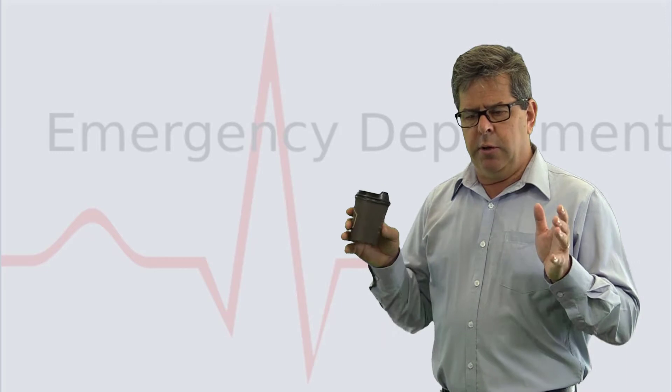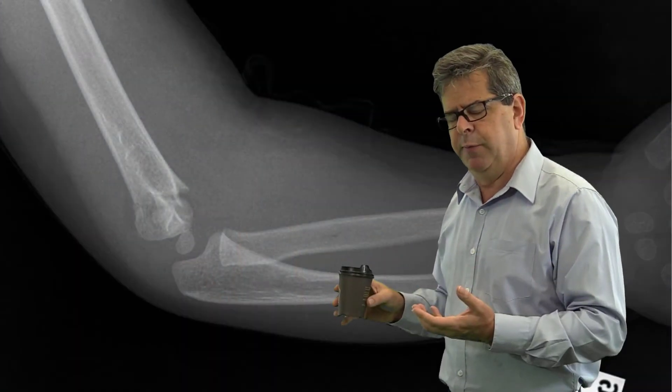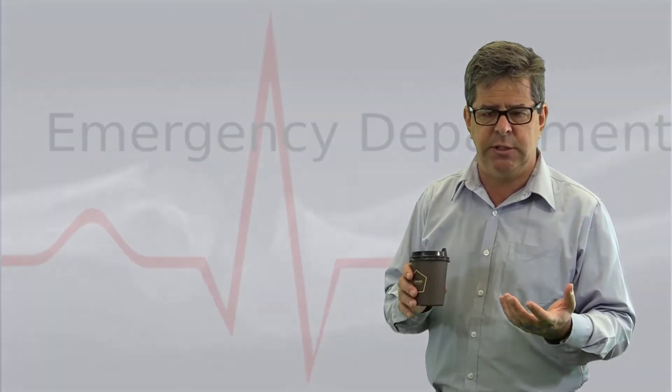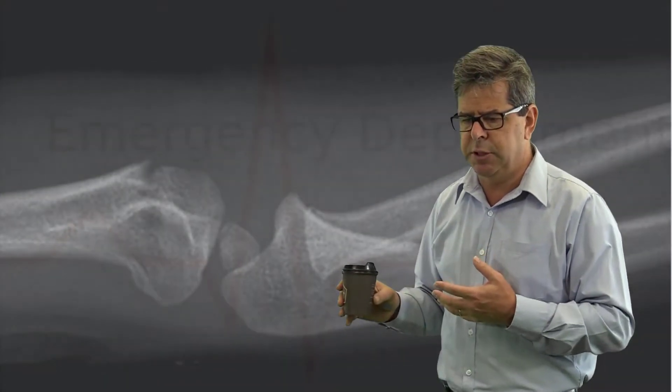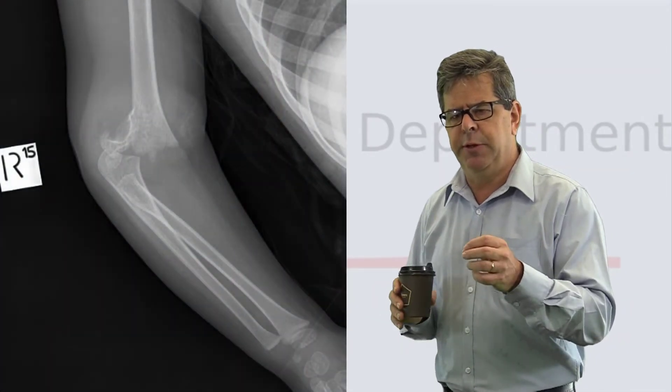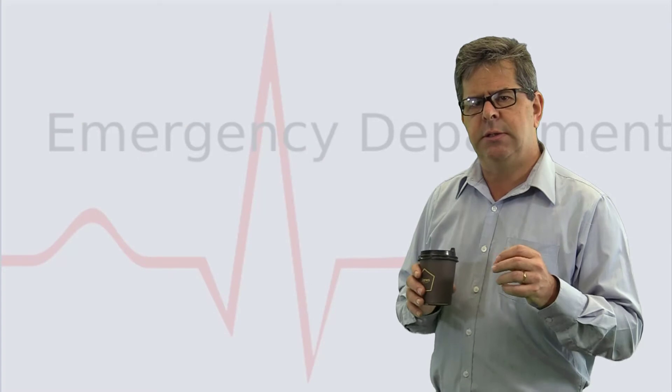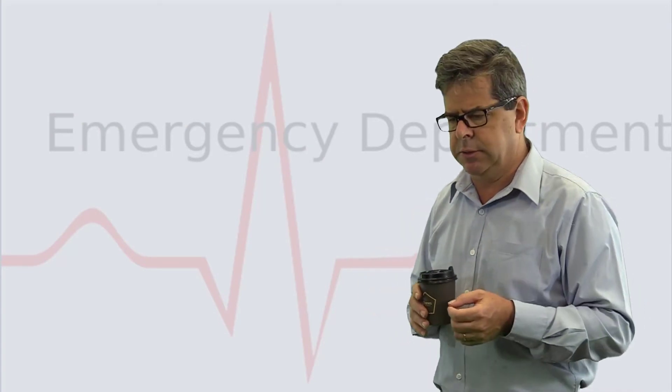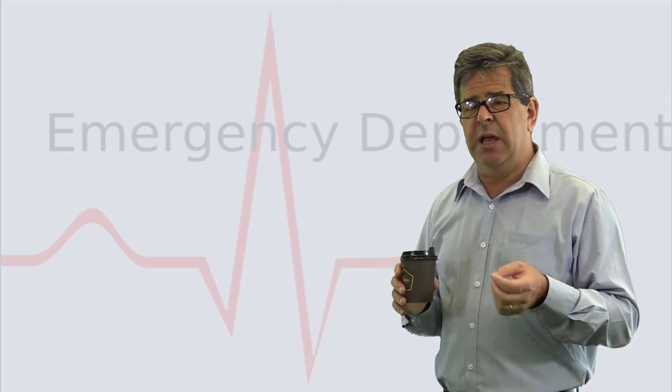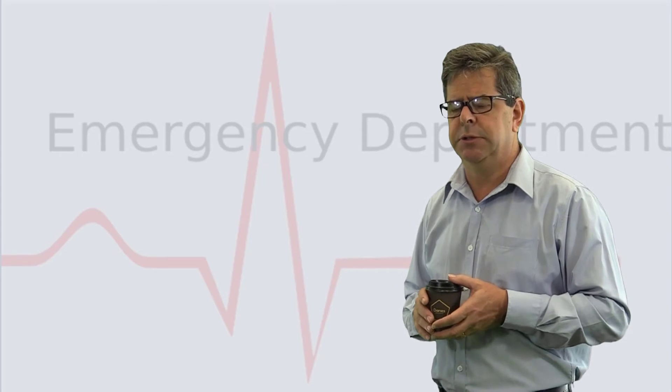We've got these different types of supracondylar fractures. One thing we need to talk about is minimally or not displaced supracondylar fractures, because these are occasionally missed in the emergency department. They're called sprains - a dangerous thing in pediatrics.